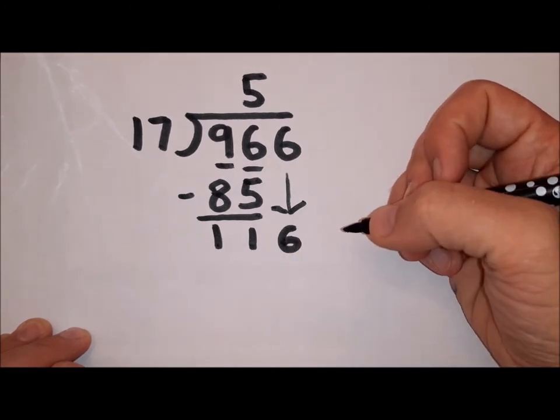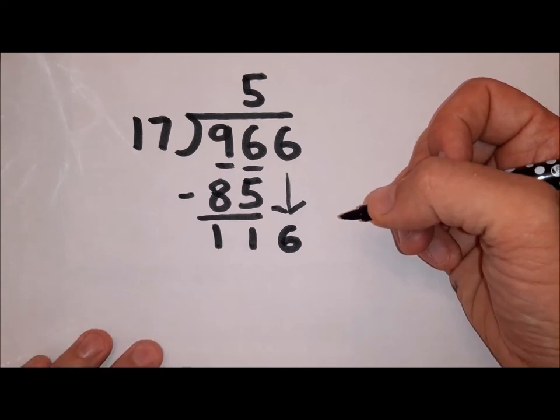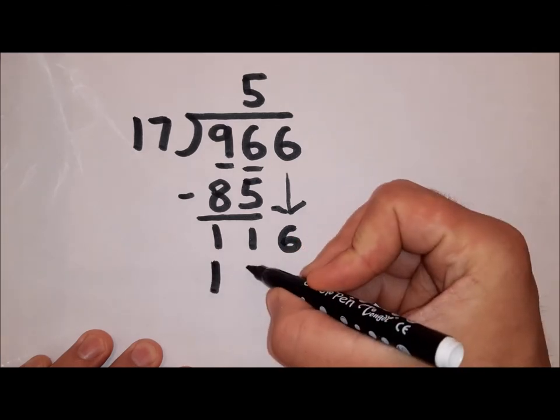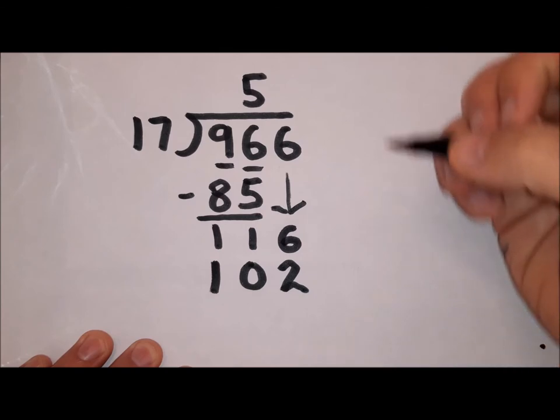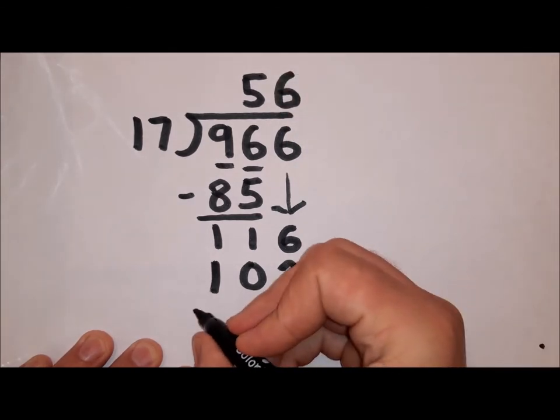116 divided by 17. If I know 5 lots of 17 is 85, if I add 17 more it gives me 102. And then 17 more is 119 which is too many. So the answer of 6 lots of 17 is 102.